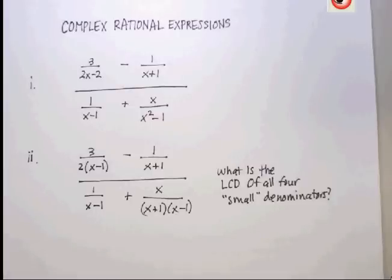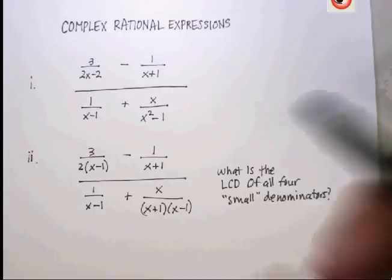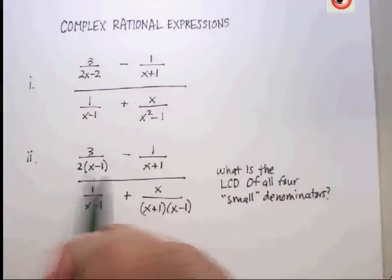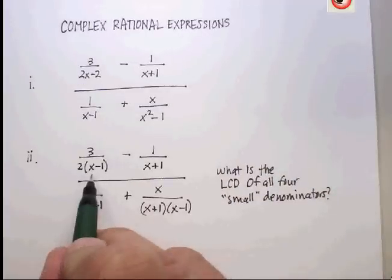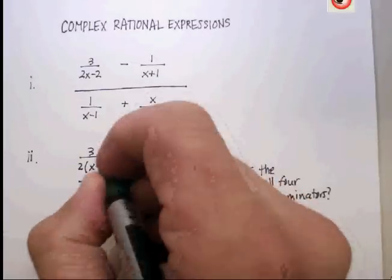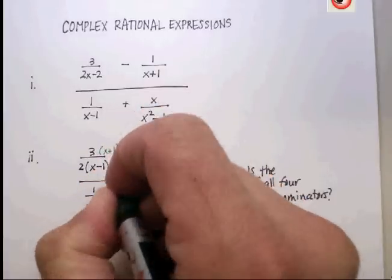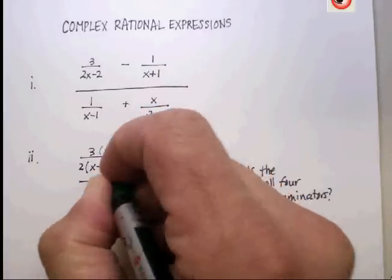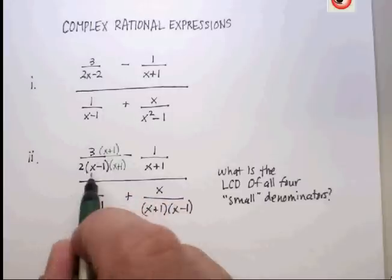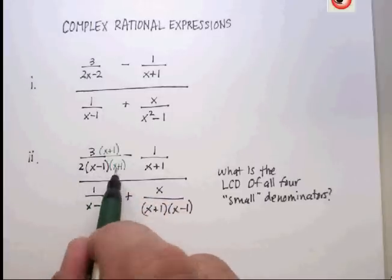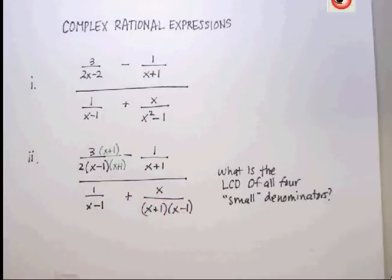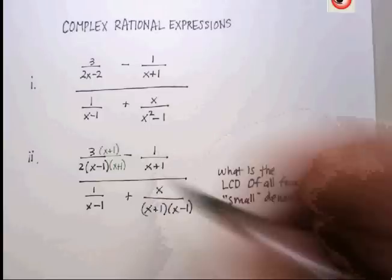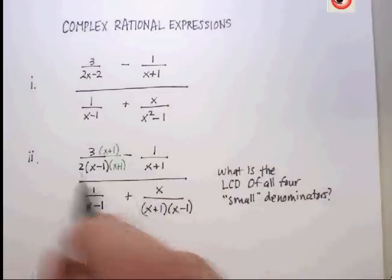So what we're going to do now in order to solve this or to make this a little bit simpler is supply the missing denominators in each one. How do you do that? You multiply by 1. So in this one for example, I'm missing just the (x plus 1) so let's multiply by 1 that way we don't change that expression, right? But we all of a sudden now have supplied the missing denominator.